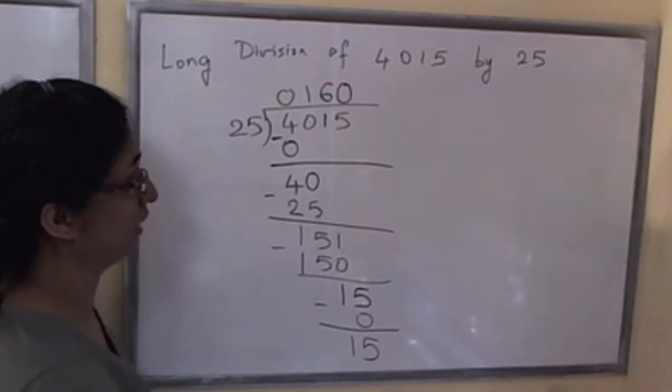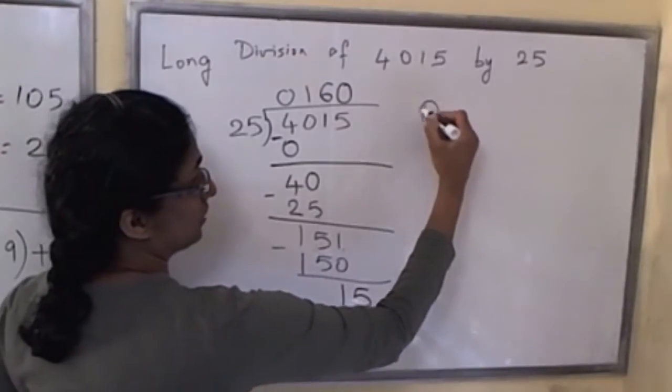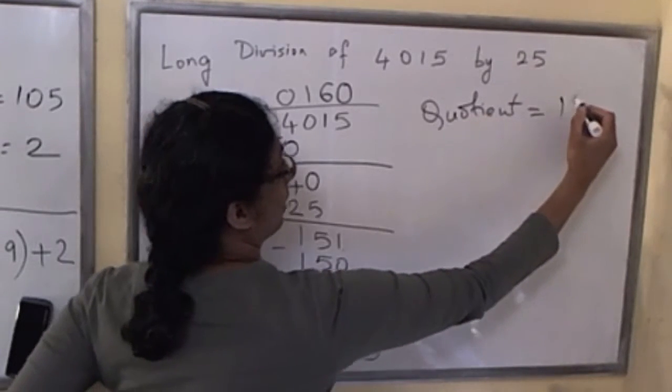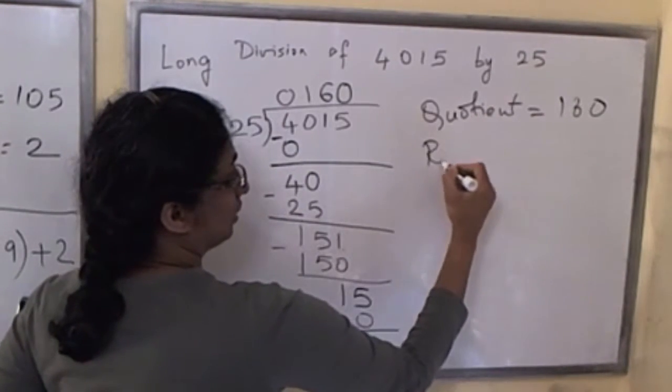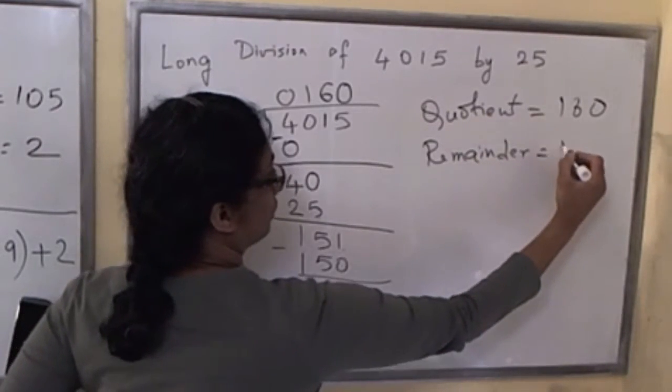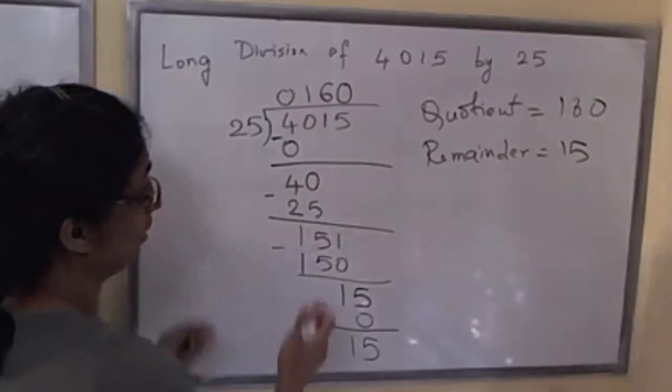So the conclusion here is the quotient is 160, the remainder is 15.